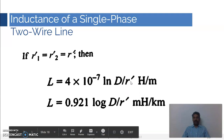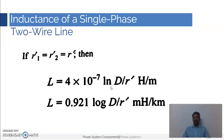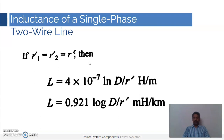This is how you calculate the inductance of a single-phase two-wire line. In both cases — the isolated conductor and the two-wire line — we have assumed that the conductors are solid. But in reality, transmission lines do not use solid conductors; they use stranded conductors. In the next video we are going to discuss these different types of conductors. Thank you.